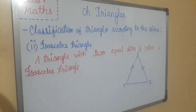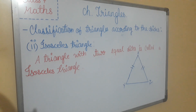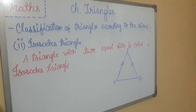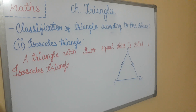The second type is the isosceles triangle. A triangle with two equal sides is called an isosceles triangle. As you can see in the figure, in triangle XYZ, XY is equal to XZ, so XYZ is an isosceles triangle. The two angles opposite to the equal sides are also equal, therefore angle Y is equal to angle Z.